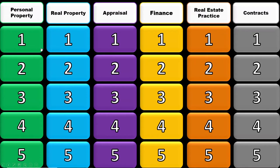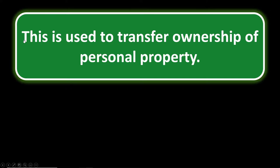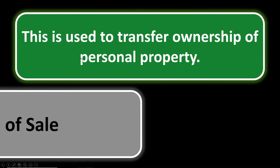Personal property number one: what is used to transfer ownership of personal property? You should be thinking of a bill of sale. A bill of sale is what is used to transfer personal property. For example, if you're selling a mobile home that's not attached to land — it's not real property, it's just personal property — you would use a bill of sale. With real property, we usually use deeds.